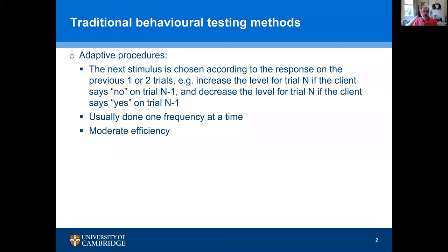Traditional methods for testing in audiology — for example, measuring the audiogram — use an adaptive procedure where the next stimulus is chosen according to the response from the previous one or two trials. For example, increase the level for trial n if the client says no on trial n minus one, and decrease the level if the client says yes. This is usually done one frequency at a time, and it has only moderate efficiency — it takes longer than it needs to take.